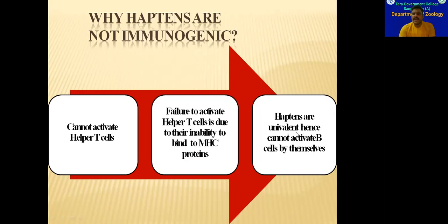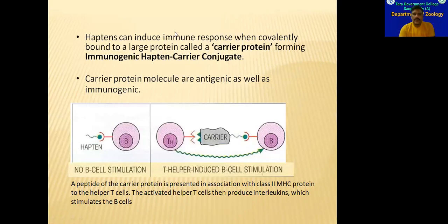Hapten is univalent. Univalent means it has only one active site. In the same way, the lymphocyte recognizes the first part of the active site. The first part of the active site relates to univalent binding and immunogenicity.